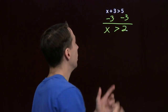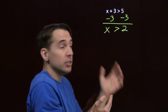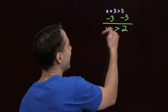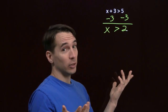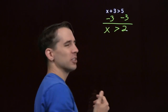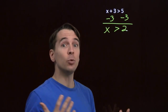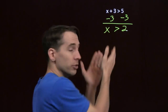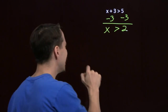You can go ahead and test it. Put in 3: 3 plus 3 is 6, that's greater than 5 — that works. Put in 7: 7 plus 3 is 10 — that works too. If I put in something less than 2, put in 0: 0 plus 3 is 3, and 3 is not greater than 5. What if I put in 2? 2 plus 3 is 5, and 5 isn't greater than 5 — 5 is equal to 5. So 2 doesn't work. Our solution x greater than 2 tells us x has to be greater than 2, can't equal 2.